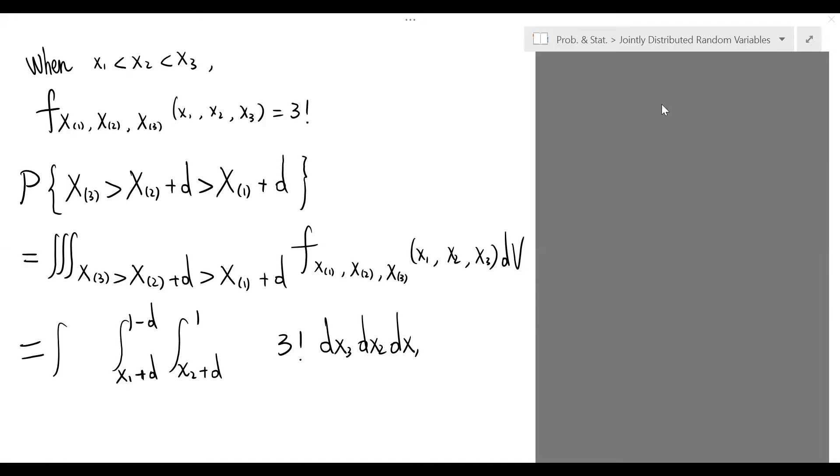Similarly, the upper bound for the integral of the last variable x sub 1 is just 1 minus 2d, while the lower bound is given by 0. Then, through a direct computation, we conclude that the integral is equal to 1 minus 2d cubed.